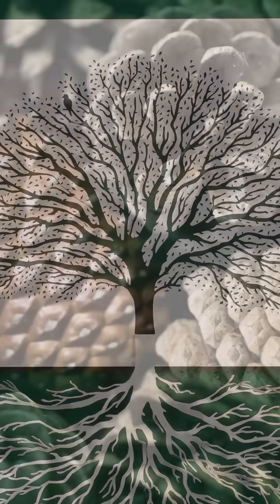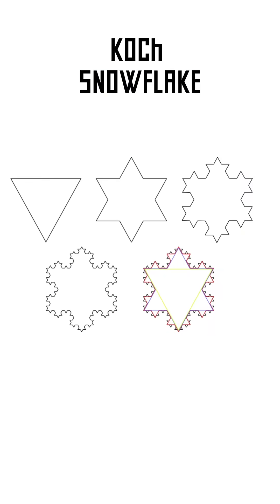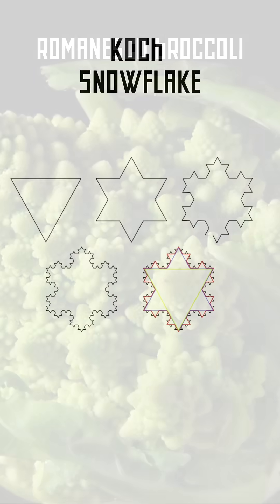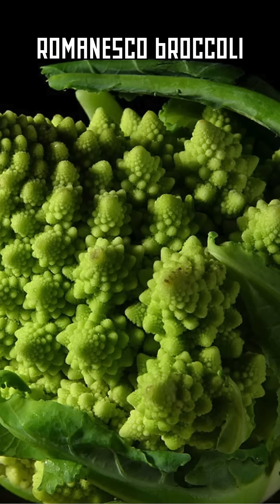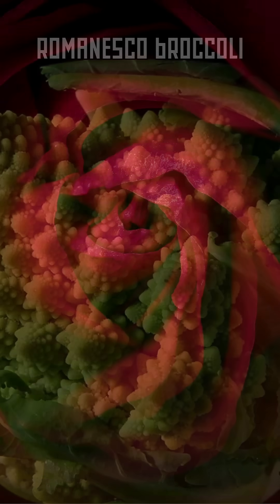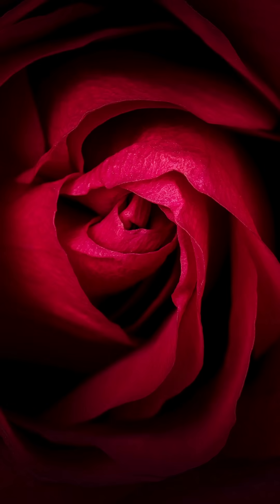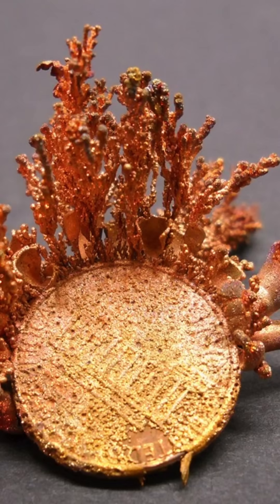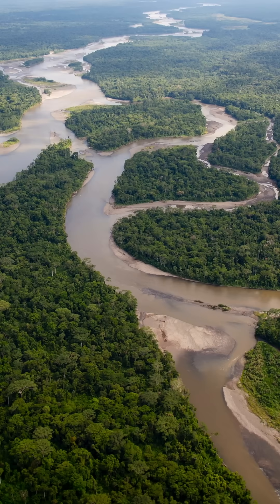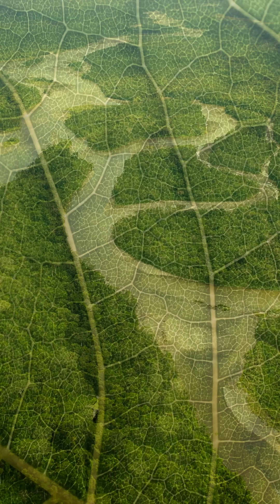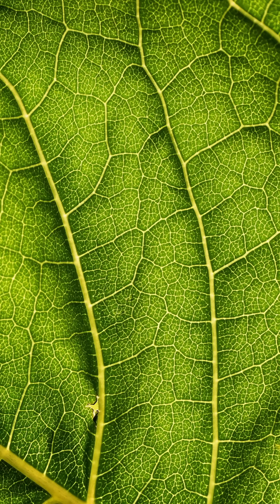You also see fractals in things like pine cones, snowflakes, the Koch snowflakes — a very familiar fractal. You see it in plants; anytime you see a plant that has a spiraling leaf pattern, a spiral phyllotaxy, that is a fractal. You see it in copper crystals, and in rivers. You see it in the veins of leaves, and you even see it in foam bubbles.